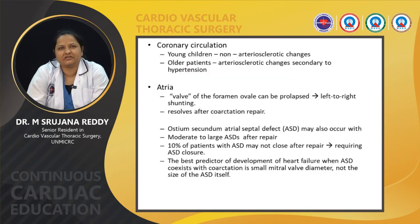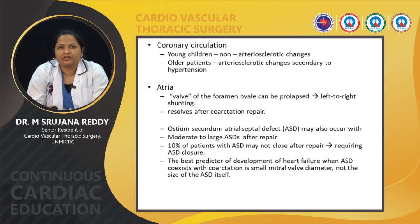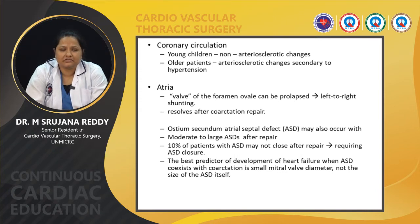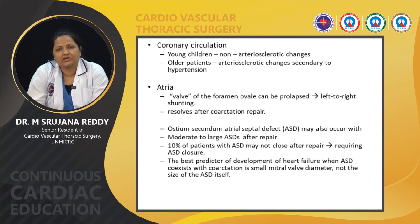Regarding coronary circulation, in young children there are non-arteriosclerotic changes with intimal thickening and media proliferation. In older patients, changes are again secondary to hypertension. Coming to the atria, a patent foramen ovale can be present and can lead to left-to-right shunting, which usually resolves once the coarctation is repaired. Secundum ASDs are also a common occurrence along with coarctation.